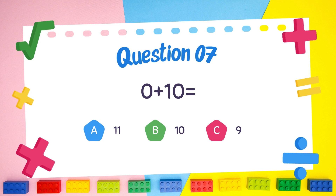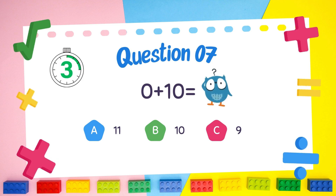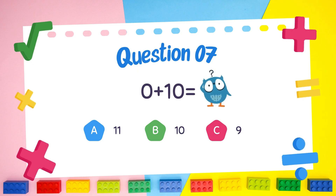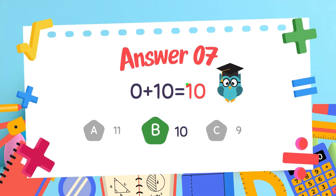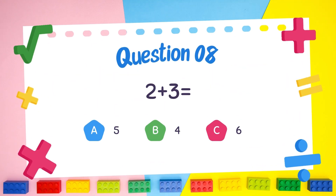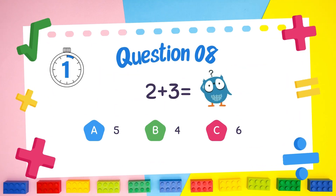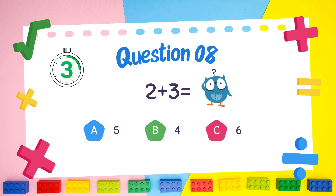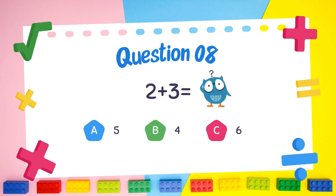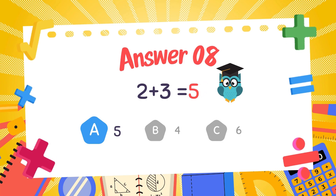What is 0 plus 10? The answer is 10. What is 2 plus 3? The answer is 5.